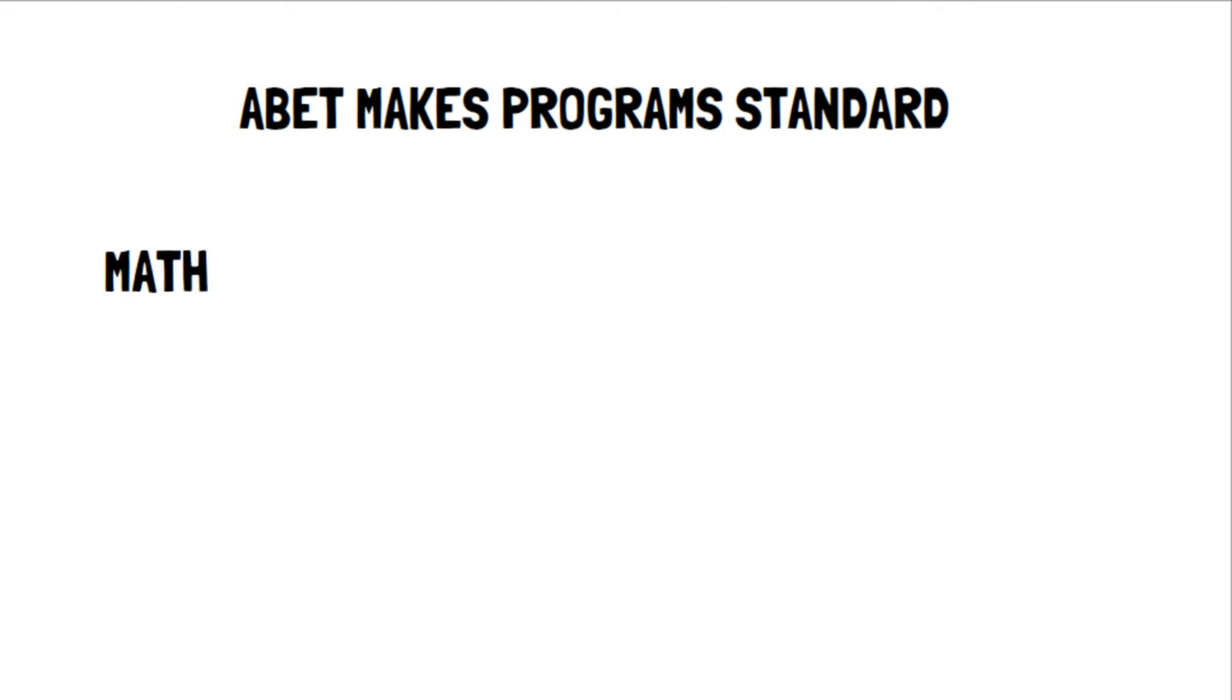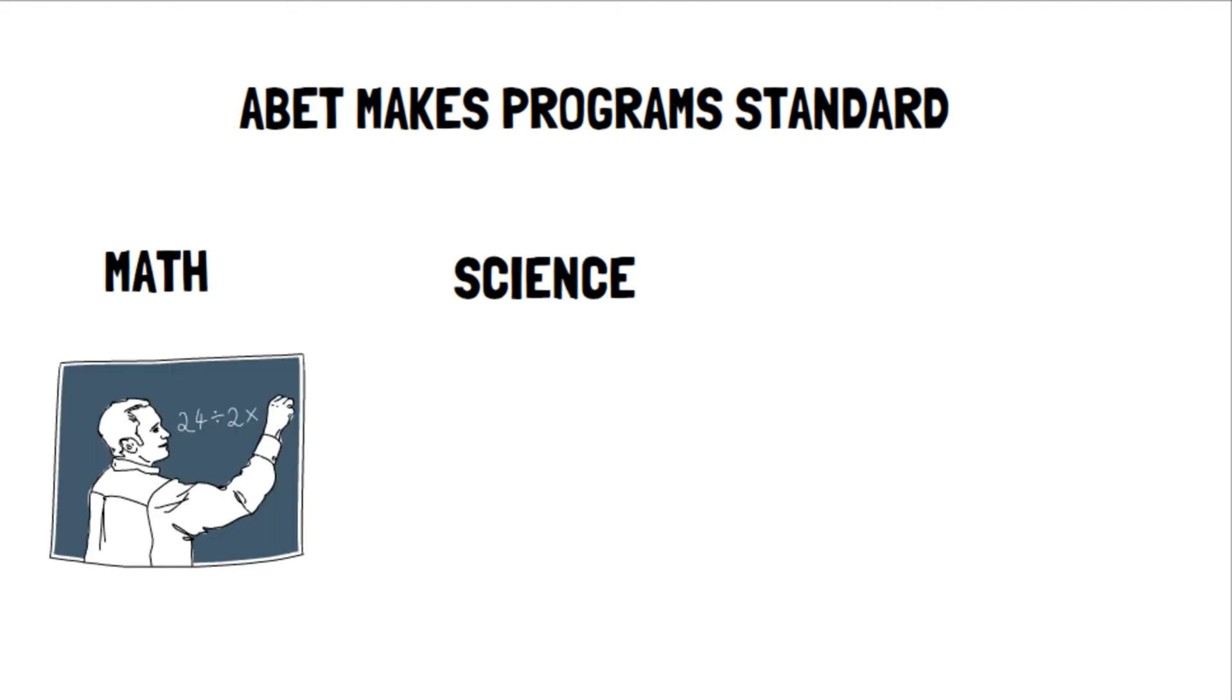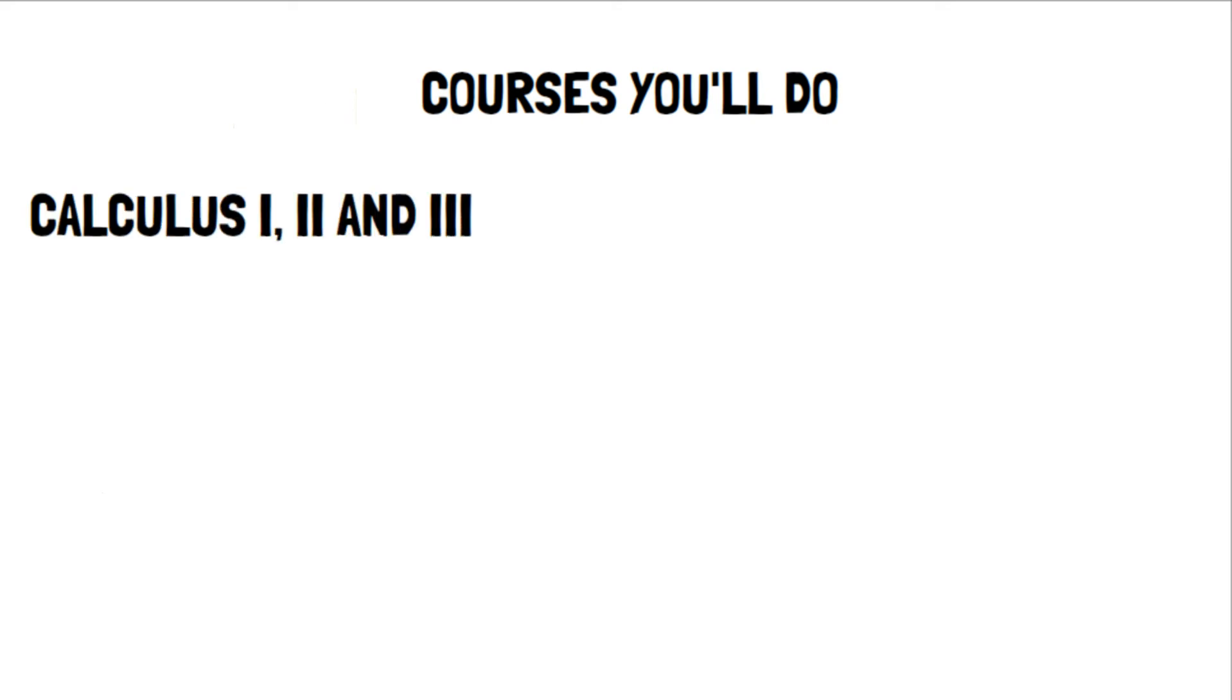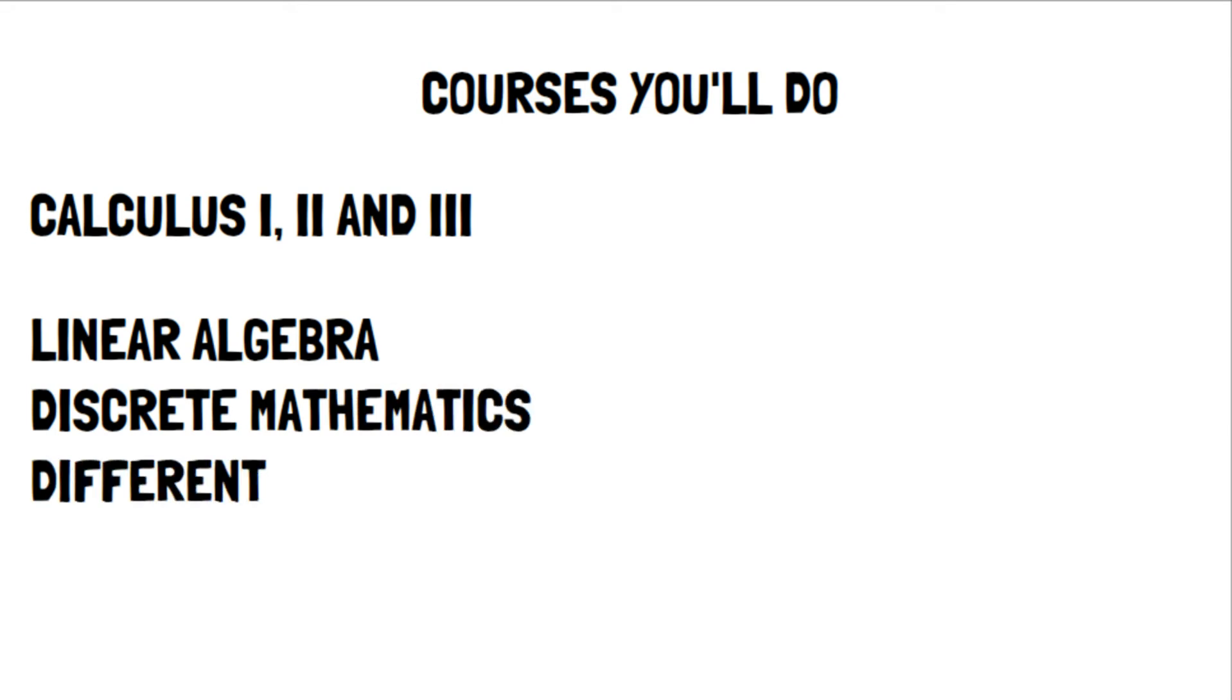ABET mandates for EE programs that you do a certain amount of mathematics, science or lab courses, courses related to the major and a final design project. What this means is that in an EE program, you'll do courses in calculus, usually calculus one, two and three, as well as linear algebra, discrete mathematics, differential equations and statistics.